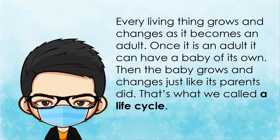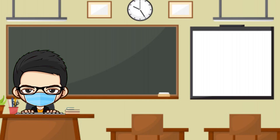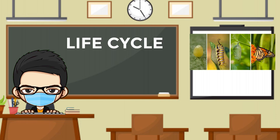Every living thing grows and changes as it becomes an adult. Once it is an adult, it can have a baby of its own. Then the baby grows and changes just like its parent did. That's what we call a life cycle. All living things go through a cycle called a life cycle.